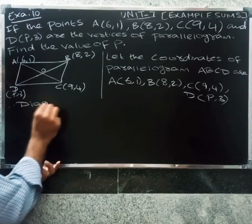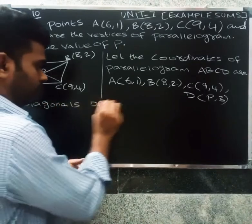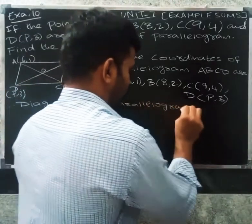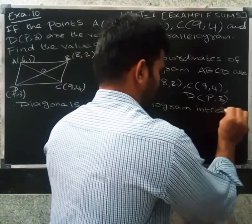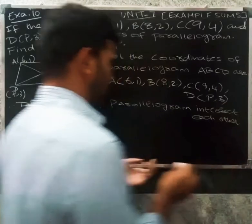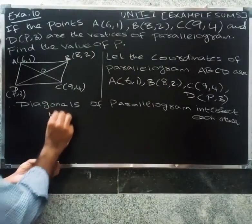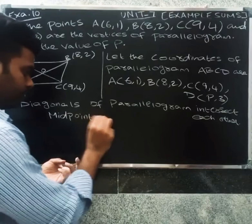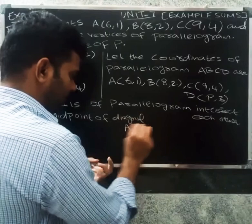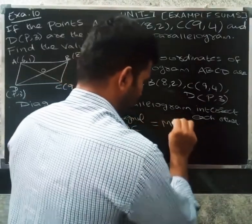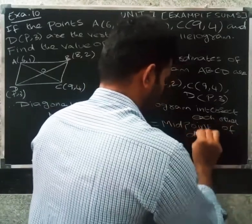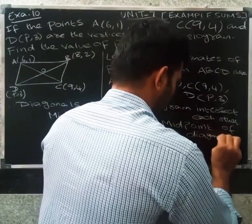Therefore, diagonals of a parallelogram intersect each other. So midpoint of diagonal AC equals midpoint of diagonal BD. The midpoint formula is: x1 plus x2 by 2, y1 plus y2 by 2.